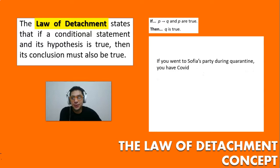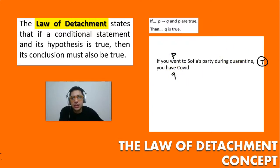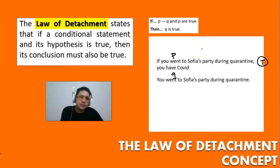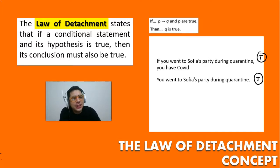Let's take a look at another example. If you went to Sofia's party during quarantine, you have COVID. Let's assume this to be true for this example. So p is going to Sofia's party during quarantine, and q is that you have COVID. Given that you went to Sofia's party during quarantine, what can you conclude?